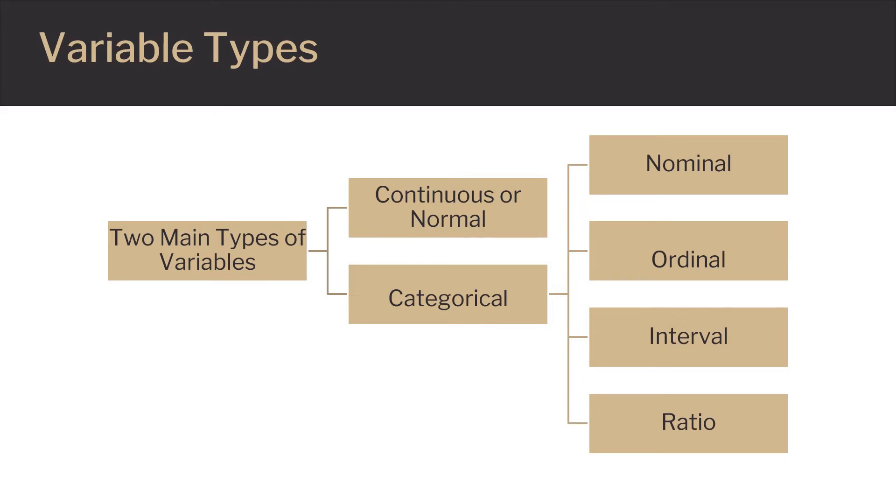Nominal data is categorical but has no specific order. For example, colors such as green, red, blue. They have discrete categories but are in no particular order.